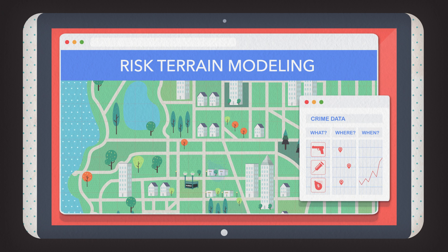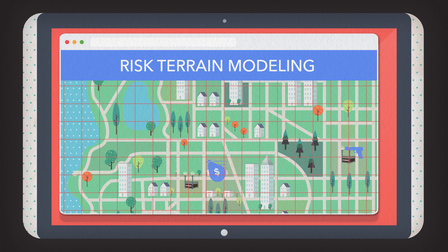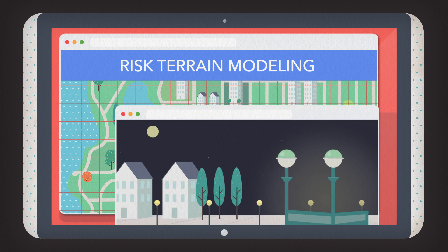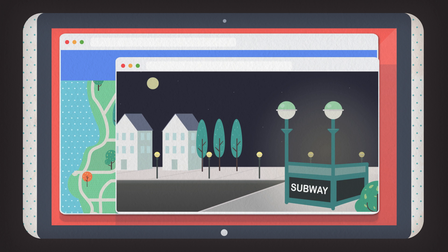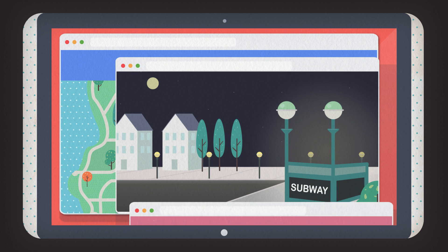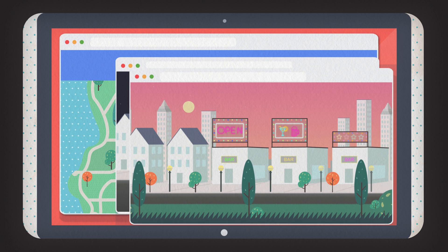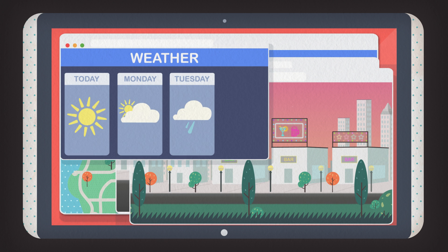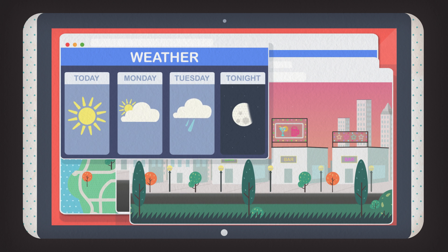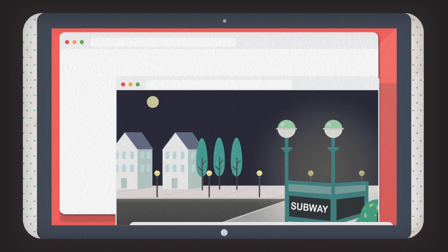Then there's risk terrain modeling, which draws on the same basic crime data as well as features of the city, like proximity to a public transportation hub, a collection of bars, the current weather, or even the phases of the moon.